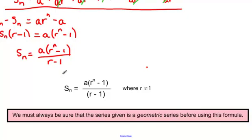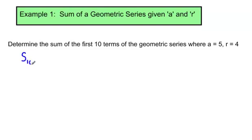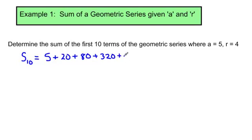Let's use this formula in some examples. Example 1: Determine the sum of the first 10 terms of the geometric series where a equals 5 and r equals 4. The series would be: S10 equals 5 plus 20 plus 80 plus 320, and so on for 10 terms. We don't know what the 10th term is, so we'll use the formula.